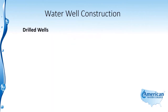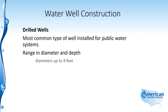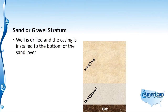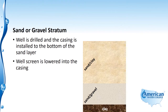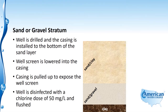Drilled wells are the most common type of well installed for public water systems, and they range in diameter and depth. Diameters can be up to 4 feet with depths ranging from 50 feet to several thousand feet. The well is drilled and the casing is installed to the bottom of the sand layer. The well screen is then lowered into the casing and the casing is pulled up to expose the well screen. The well is disinfected with a chlorine dose of 50 milligrams per liter and then flushed.